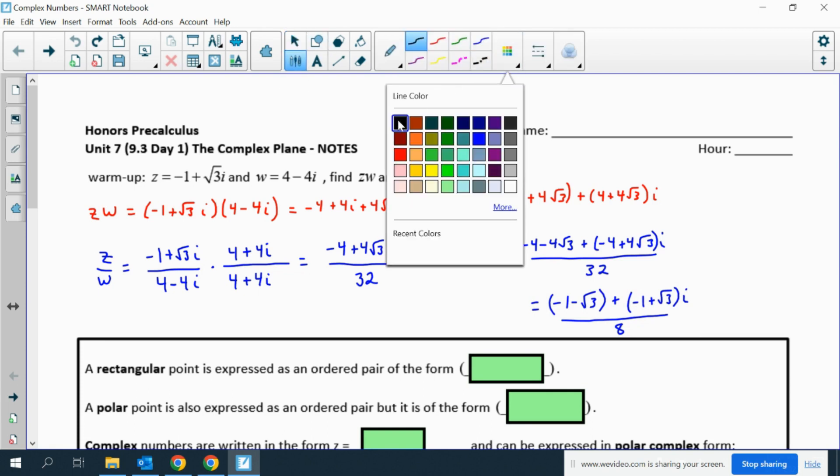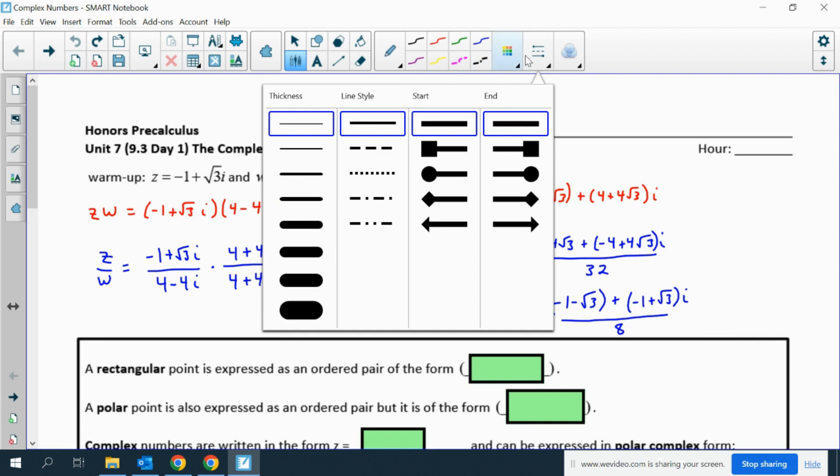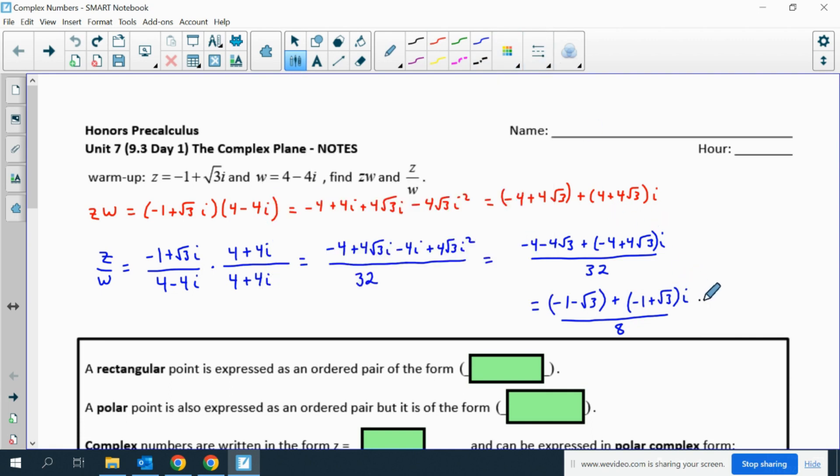Or if we wanted to, we could separate them into their parts: negative 1 eighth minus root 3 over 8, and then plus negative 1 eighth plus root 3 over 8 i. So we can write it like that also.